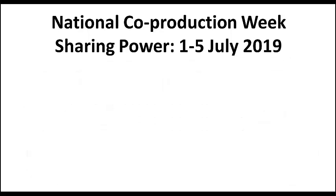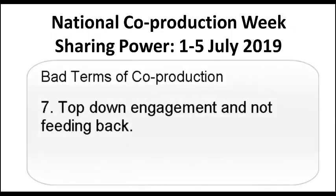Number seven is top-down engagement and not feeding back. Many systems operate from the CEO down through the board, senior staff, health professionals, all the way to the end user — without giving the end user any chance to influence or get involved at the top. The board cannot see the wood from the trees and are making decisions that affect the community.